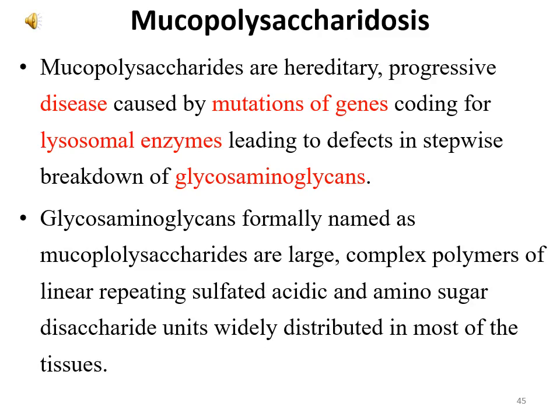Mucopolysaccharidoses are hereditary progressive diseases caused by mutations of genes coding for lysosomal enzymes, leading to defects in the stepwise breakdown of glycosaminoglycans. Glycosaminoglycans, formerly named mucopolysaccharides, are large complex polymers of linear repeating sulfated, acidic, and amino sugar disaccharide units widely distributed in most tissues.